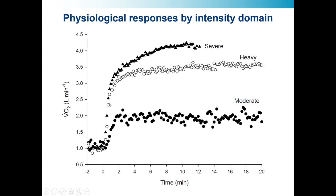Then we have severe intensity exercise, shown with the black triangles. You can see there is no steady state whatsoever — exercise finishes before 20 minutes, in this case after about 12 minutes, and maximal oxygen uptake has been attained. There is also a fourth intensity domain, extreme intensity exercise, differentiated from severe in that you reach task failure too soon to achieve VO2 max — these bouts last substantially less than two minutes. We don't use a metabolic threshold to demarcate severe and extreme exercise, but we do to demarcate moderate, heavy, and severe.